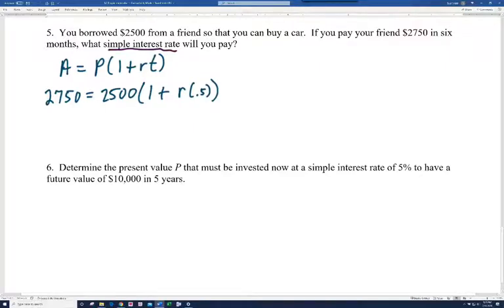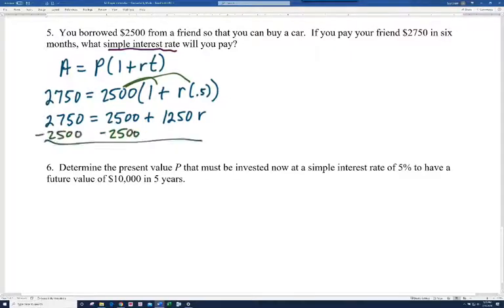Now I'm going to go ahead and simplify the right side before I try to solve for R. So we're going to need to distribute. 2,500 times one is 2,500. And 2,500 times .5 and then that will be times R. We're basically taking half of 2,500. That's going to be 1,250R. And so if we're solving this equation, we want to get R by itself. So we need to get rid of this 2,500. So let's subtract 2,500 on both sides.